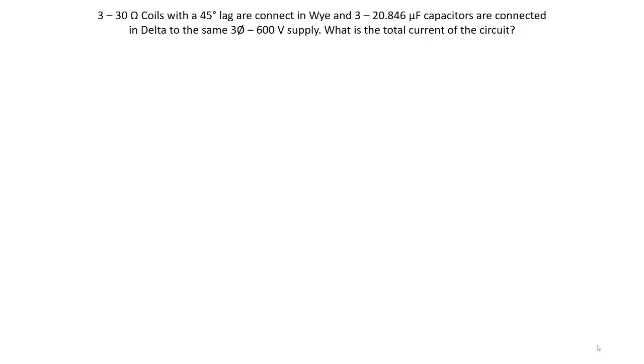They're connected in Wye, and to the same circuit we've got three 20.846 microfarad capacitors and they are connected in Delta to the same three phase 600 volt supply. The question is what is the total current of the circuit?